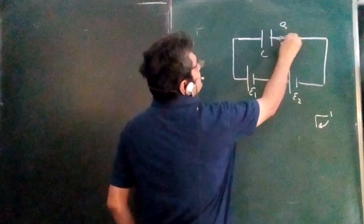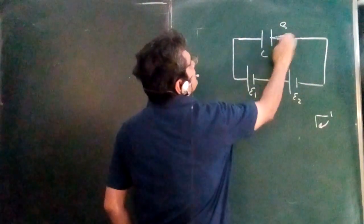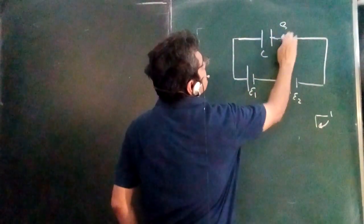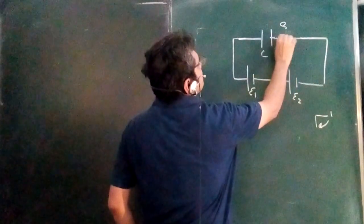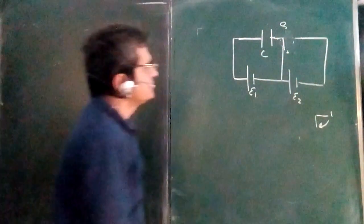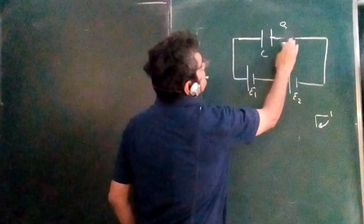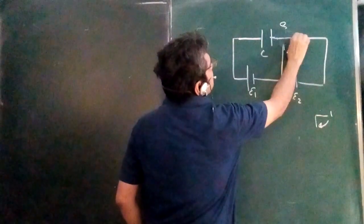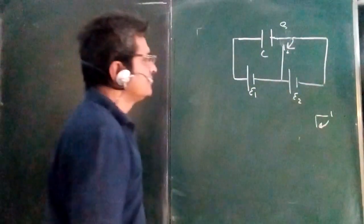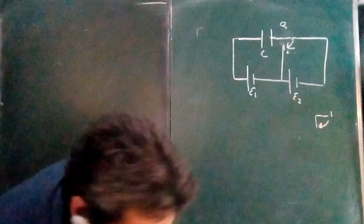Initially it is connected like this — one side is open and finally it is connected to the other side, which is open. So I have to find out: when this switch changes from position one to position two, how much heat is lost or generated in the system?